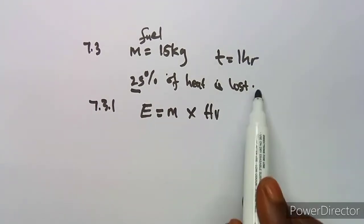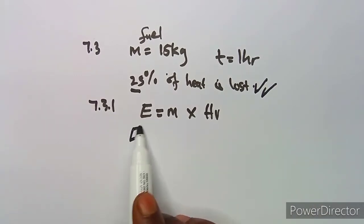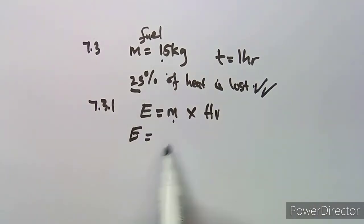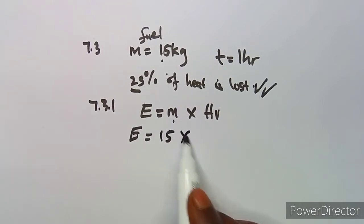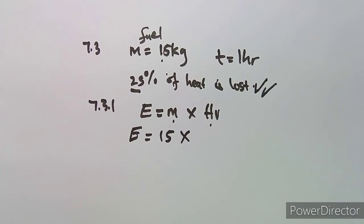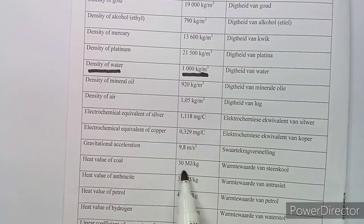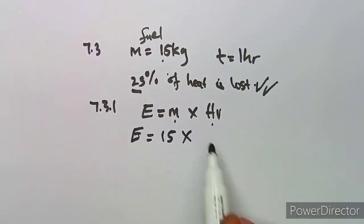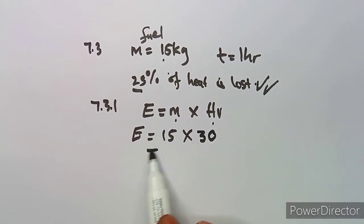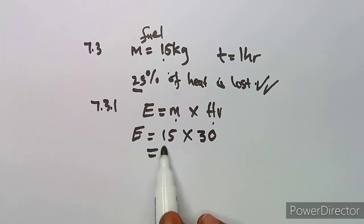So: Energy equals mass of coal, which is 15 kg, times the heat value of coal. The heat value of coal, as I have given you before, is 30 megajoules per kilogram. So you multiply: 15 times 30 megajoules per kilogram, which gives you 450 megajoules.